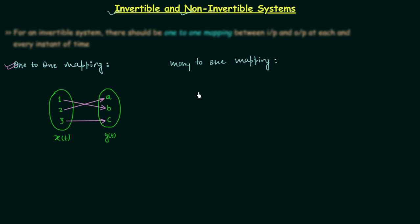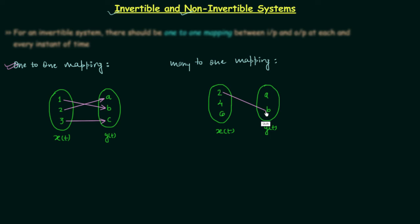In case of many-to-one mapping, two or more distinct possible values of input will produce the same output. In this example, this is the set of possible values of input x(t) — let's say the values are 2, 4, and 6 — and the set of possible values of output y(t) has elements a and b. Here, x(t)=2 produces output b, x(t)=4 produces output a, and x(t)=6 produces output b again. So for two distinct values of input the output is the same — that is b.